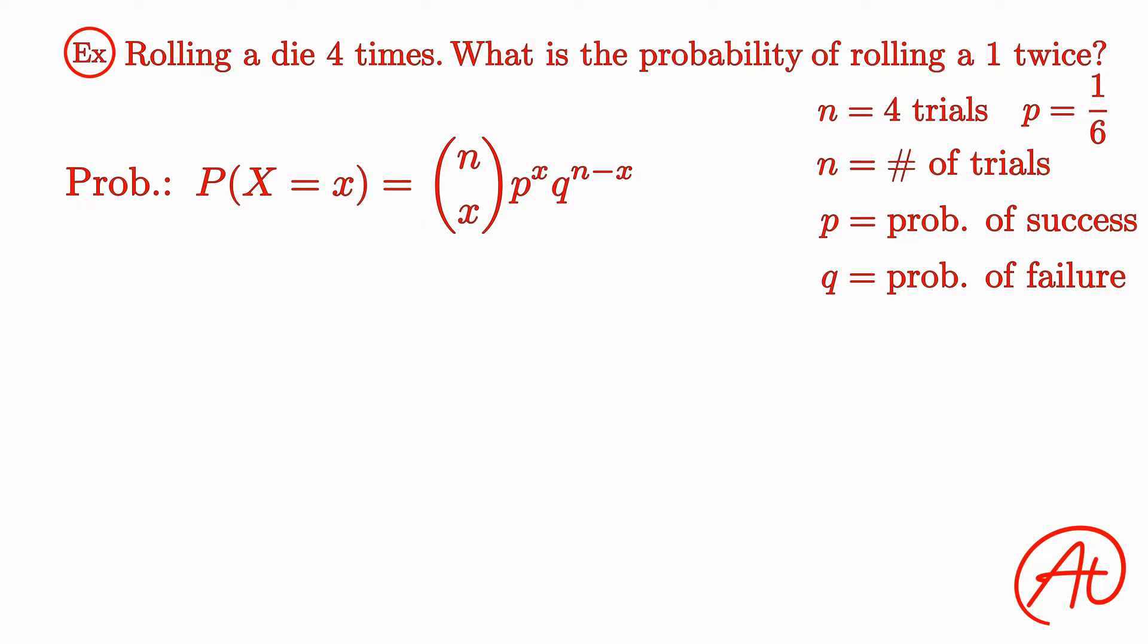As a reminder, in this experiment, we want to find the probability of rolling a 1 two out of our 4 trials. So first, let's look at what this right side of the formula gives us. With our n equaling 4 trials, our probability of success equaling 1/6, and our desired number of successes equaling 2, we can write this as (1/6) squared times (5/6) raised to 4 minus 2, or (5/6) squared.